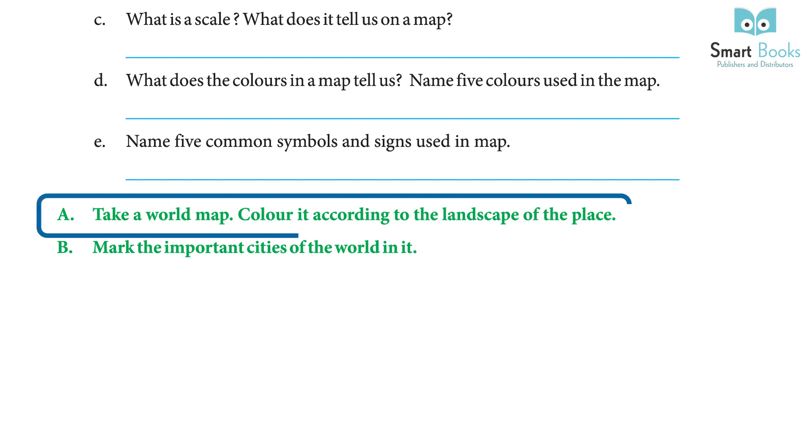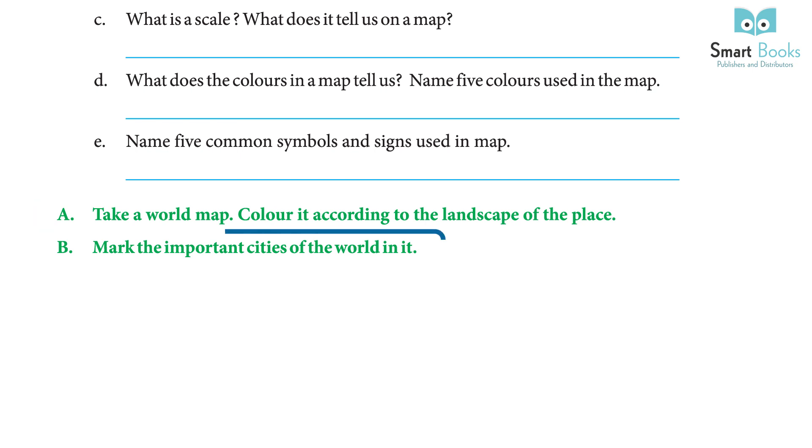Activity: A — Take a world map and color it according to the landscape of the place. B — Mark the important cities of the world in it.